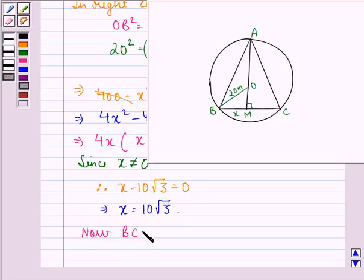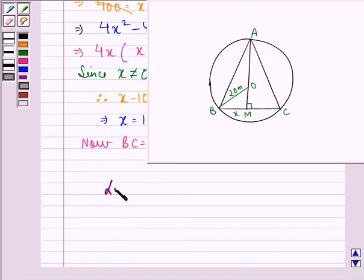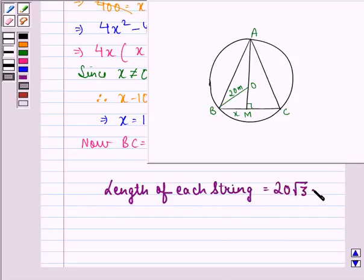Now, BC is twice of BM or we can say 2x or we can say 20 root 3. Now, we know that each string is of equal length. So, we can say that length of each string is equal to 20 root 3 meter and this is our answer to the question.